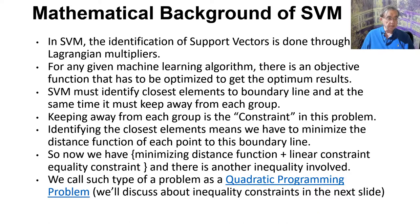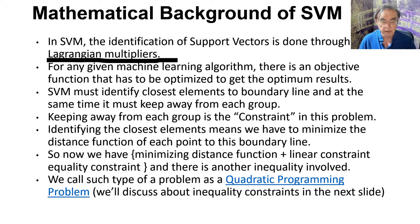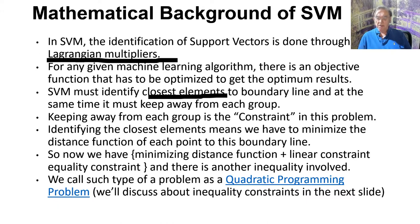They're called support vectors because these points live in a vector space. There is some standard mathematics called the Lagrange multipliers, which you use when dealing with constraints in any optimization problem. We have an objective function, and we must identify the closest elements to the boundary line and keep that boundary line as far as possible from each group. That's where the Lagrange multiplier comes in. We have a linear constraint and a minimizing constraint — that is mathematically a form of quadratic programming.